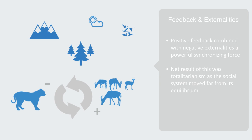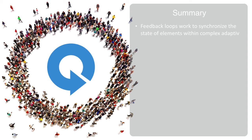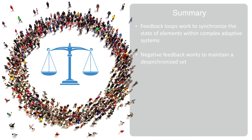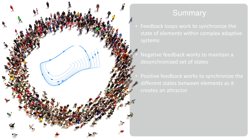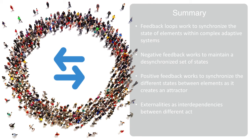In summary, we have been talking about how feedback loops work to synchronize the state of elements within complex adaptive systems. We have looked at how negative feedback works to maintain a desynchronized set of states between components as they interact through an inverse relationship that promotes diversity of states and stability. While positive feedback works to synchronize the different states between elements as it creates an attractor that exerts a force aligning elements into a single regime. Finally, we talked about externalities as interdependencies between different activities and saw how, when we combine feedback with externalities, they can work to complement and amplify each other's effect.